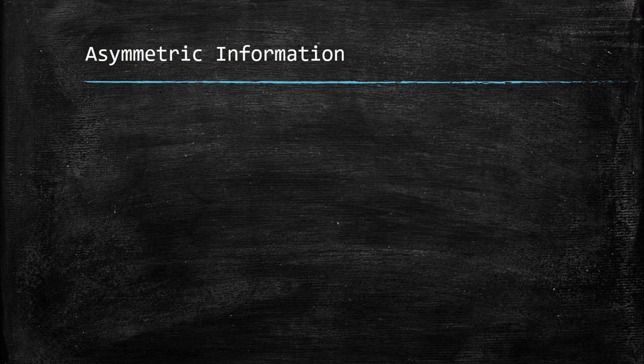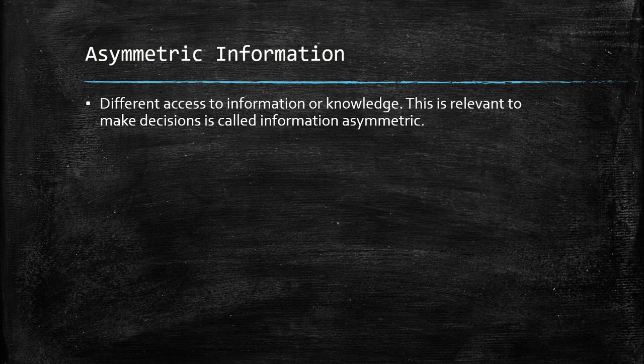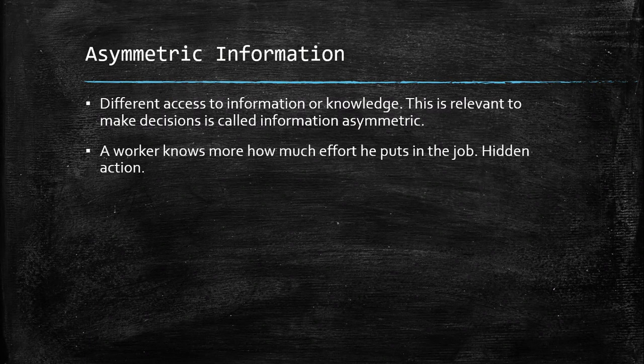Now we're going to develop the idea of asymmetric information. People have different access to information or knowledge, and this is relevant for making decisions — that is why it is called asymmetric information. Let's look at some examples. Think about a worker: a worker knows more about how much effort they put into their job. This is a hidden action. Imagine the situation of working from home — many multinationals, companies, or freelancers can do their job from their house.